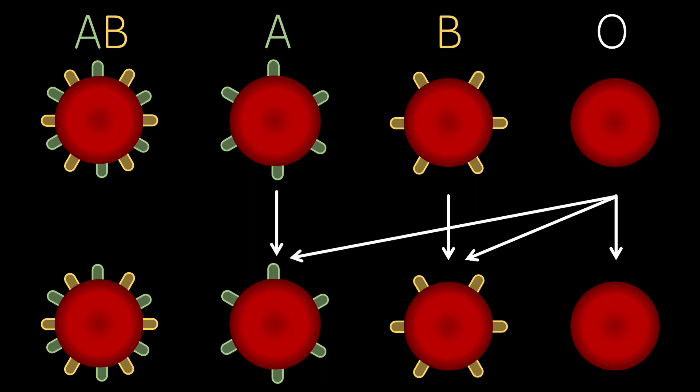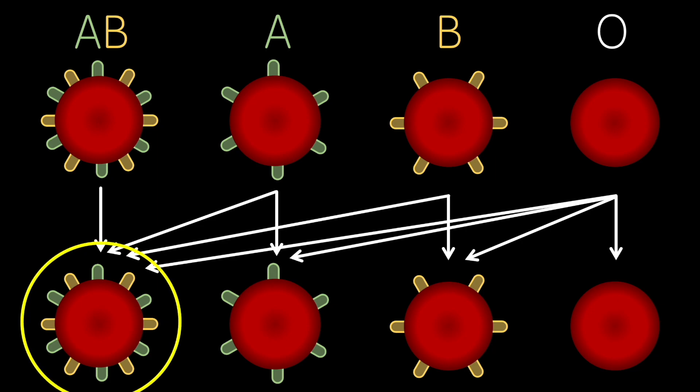Type A patients can receive blood from type A or type O donors as they only have anti-B antibodies, and type AB patients can receive blood from any other blood type as they have none of the relevant antibodies. This is why the AB blood type is known as the universal recipient.